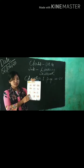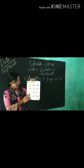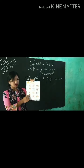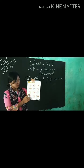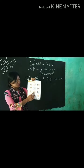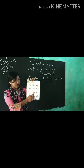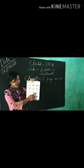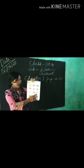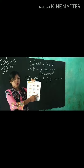G for Giraffe — G, I, R, A, F, E. Giraffe. H for Hat — H, A, T. Hat. I for Iglo — I, G, L, O. Iglo.